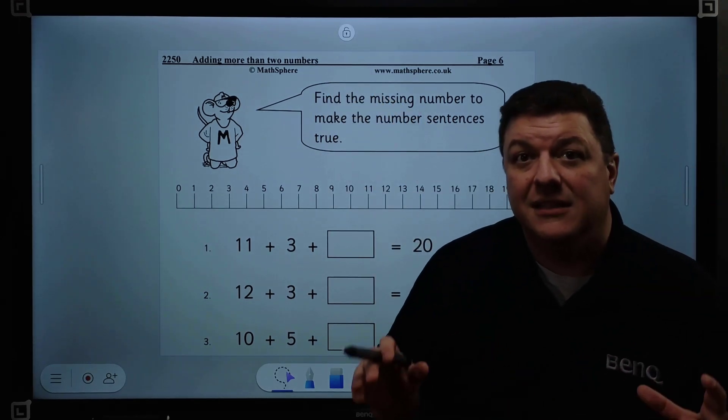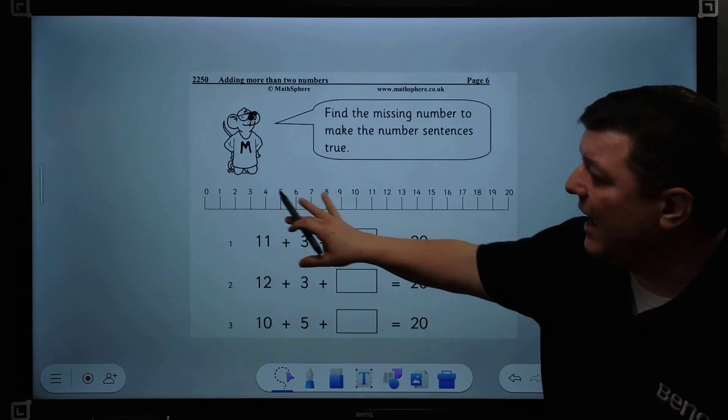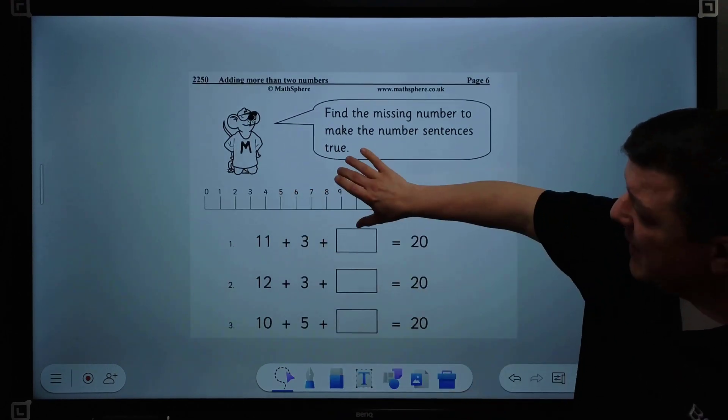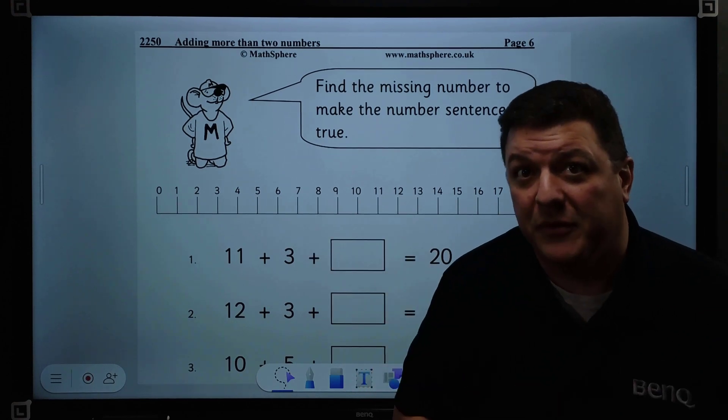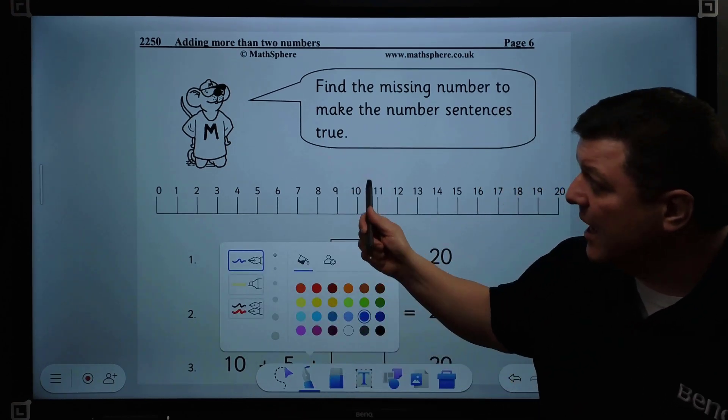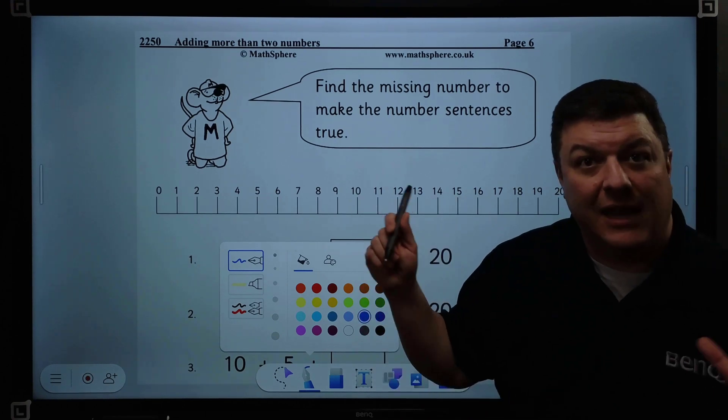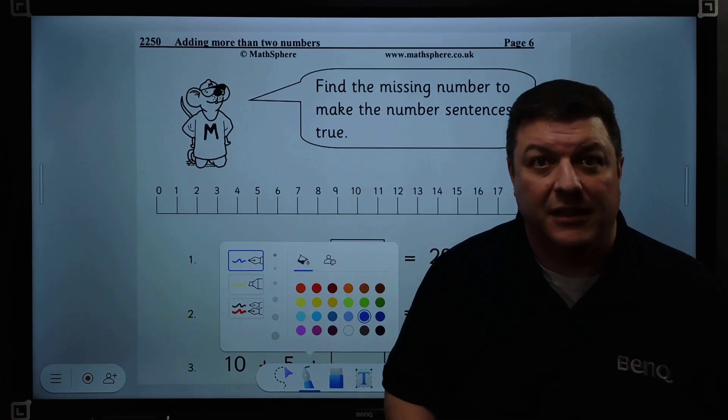And so, what that does is it locks the image so that I can't accidentally move it. Now, that looks bad because I'm pinching and zooming there, but I can't accidentally move it off of the screen, okay? So that when I annotate on top of it, I have an annotation on it, and it's not going to accidentally move it, all right?